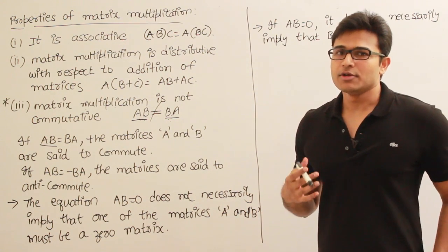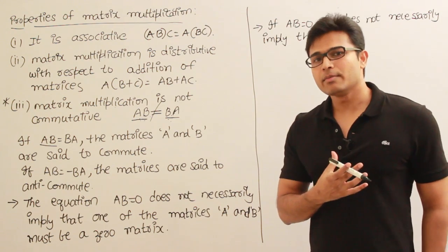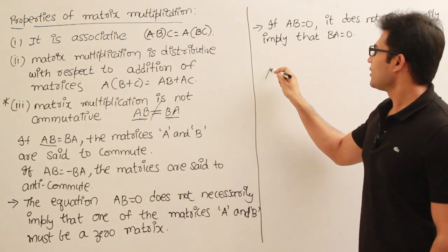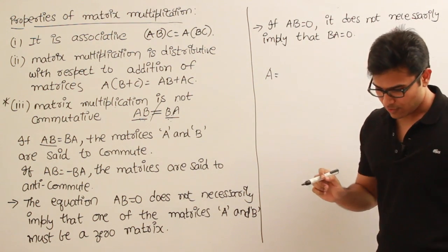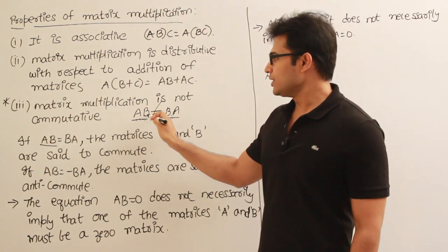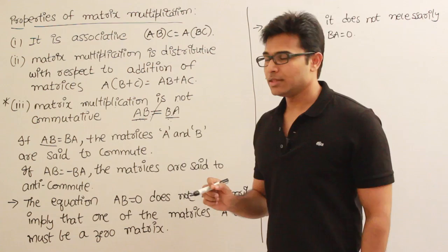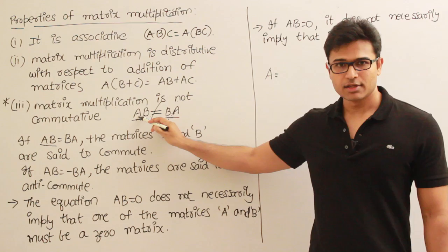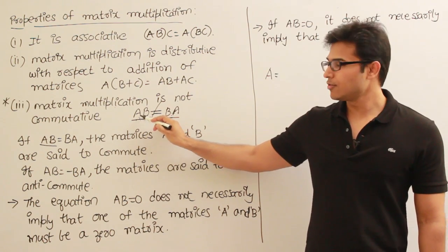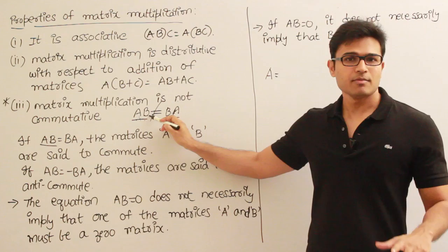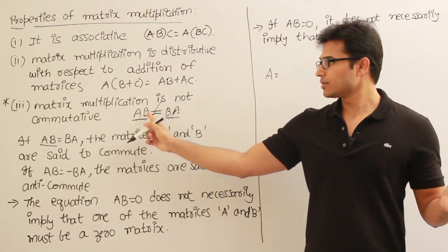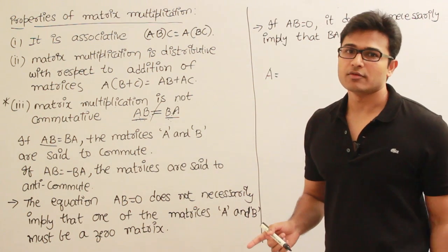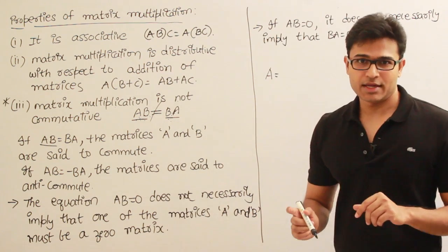Sometimes they may be equal, sometimes they may not be equal. Also, if A into B is possible, it does not necessarily mean that B into A is also possible. If the number of columns in A equals the number of rows in B, then AB is possible, but reversing it, B into A, may not be possible at all.